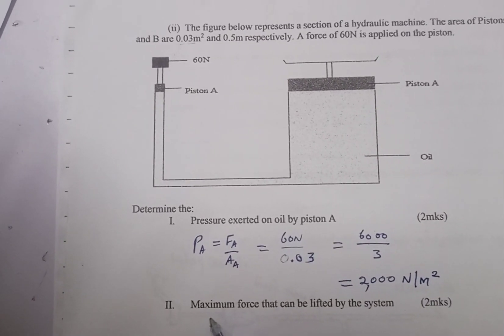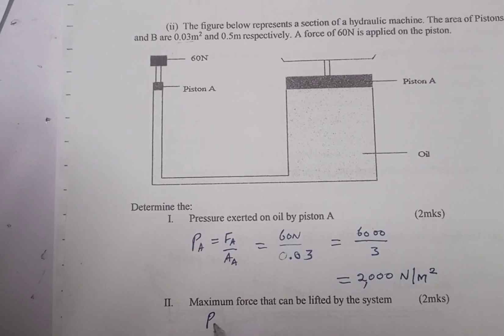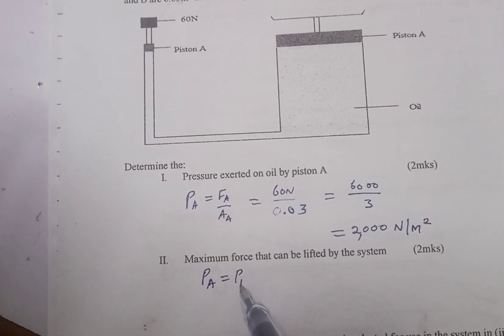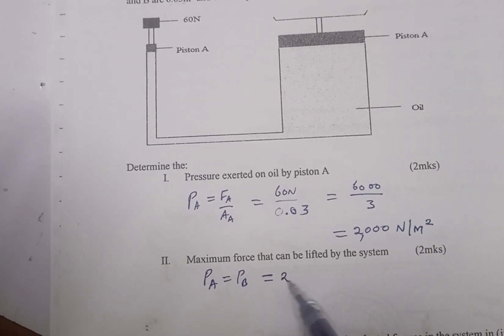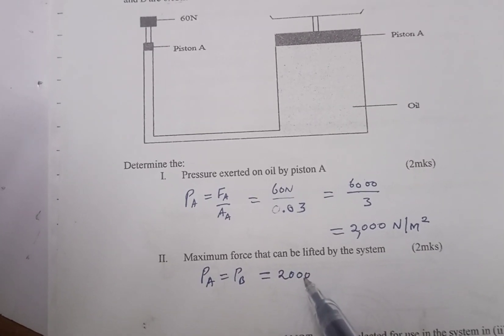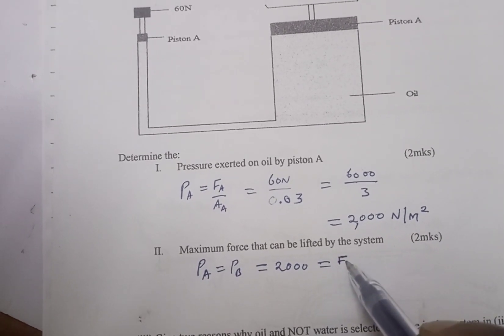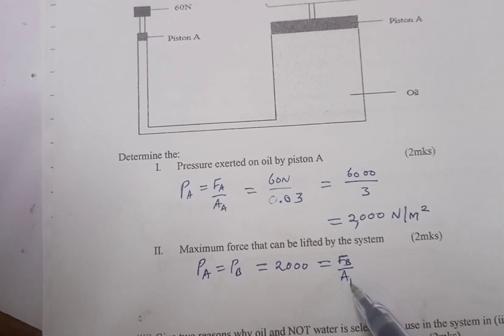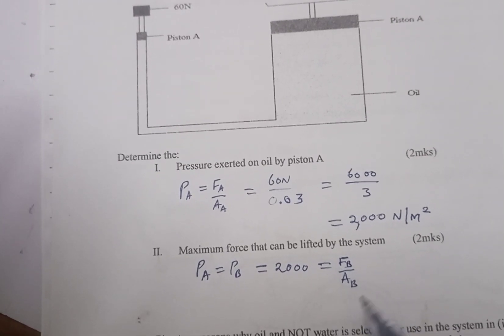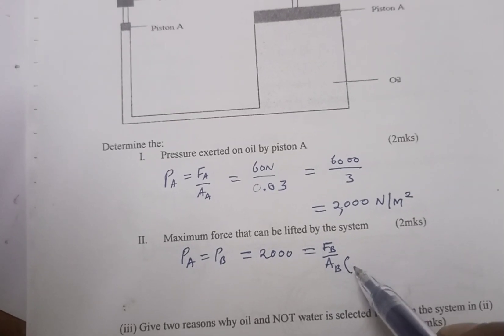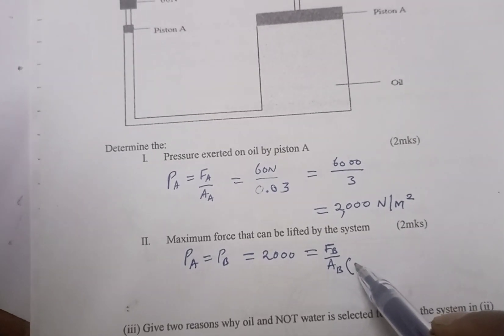The other end we should have B, not A. So therefore 2000 will equal force at B divided by area at B. We have already been provided with the area at B, so therefore force at B will be...